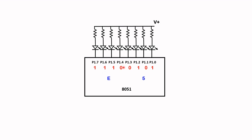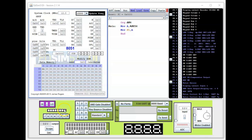With this binary pattern, only P1.4, P1.3, and P1.1 will light up, because it's zero volts there. So these three LEDs will light up. Okay, we are back in the EdSim51.